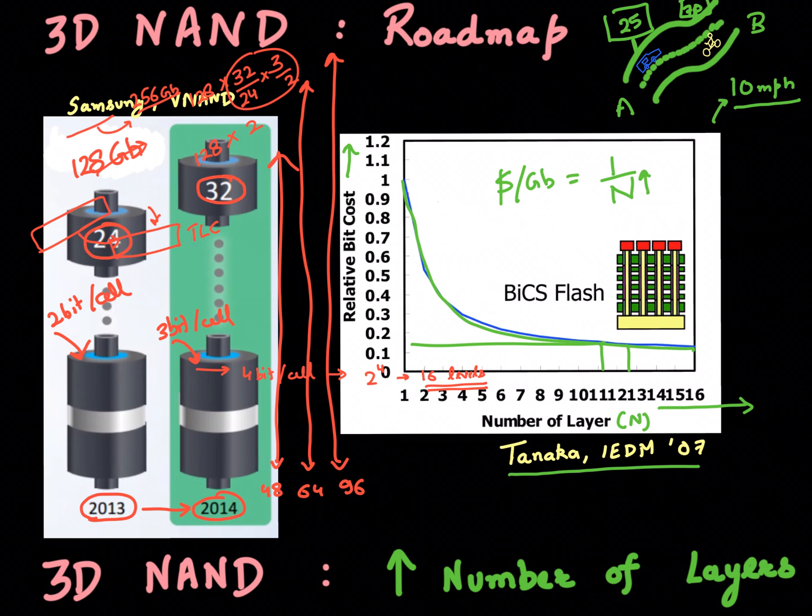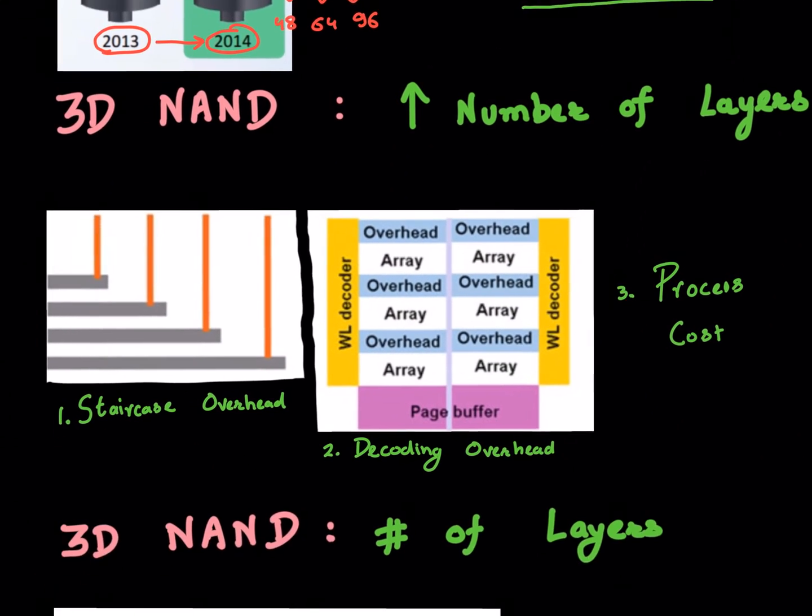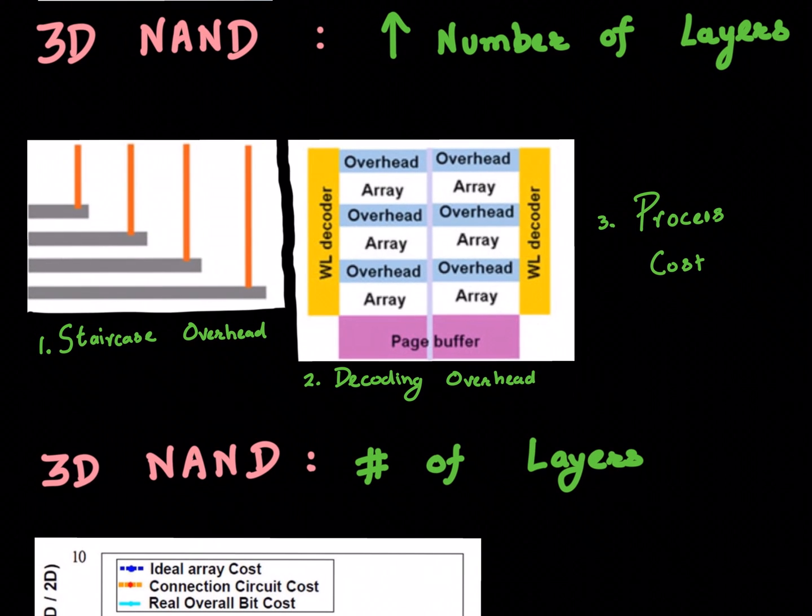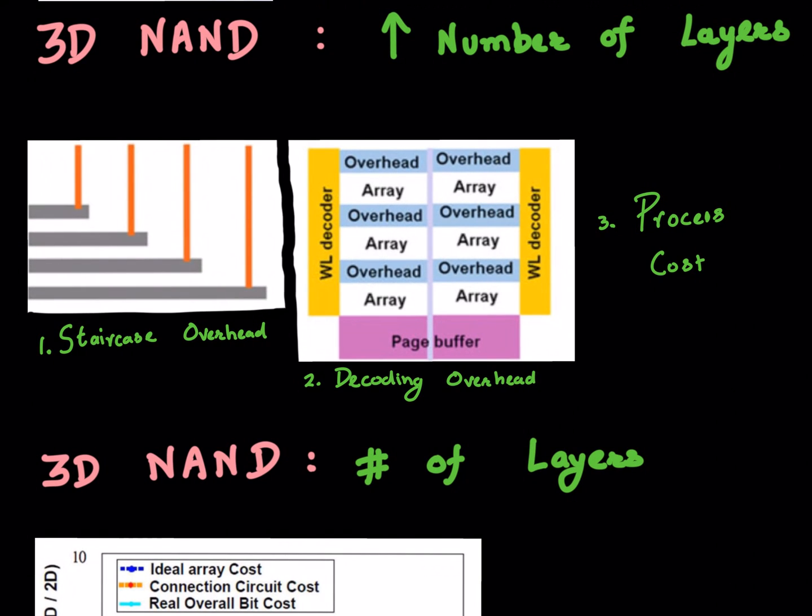Keeping that in mind, let's look at some of the other things which also come into play as you increase the number of layers that you have in your 3D NAND stack. What are some of the other things you should keep in mind when you increase the number of layers in your 3D NAND stack?